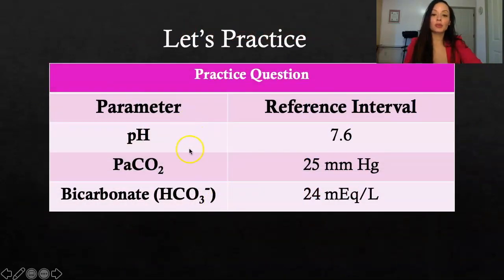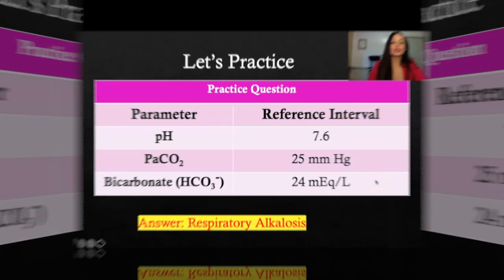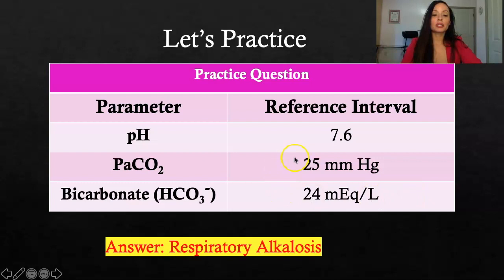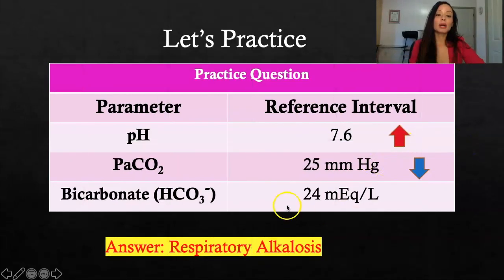Let's try another one. pH of 7.6, CO2 of 25, bicarb of 24. The answer is respiratory alkalosis. We know it's alkalosis because the normal range is 7.35 to 7.45. The CO2 is 25, which is low. pH is high, CO2 is low — opposite arrows. The bicarb is within normal range, meaning the body is not yet trying to compensate.